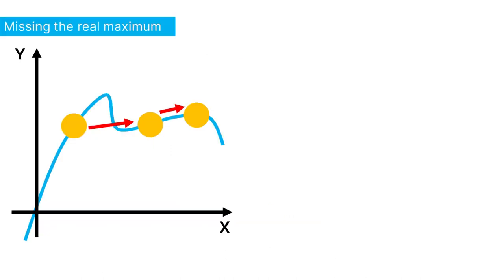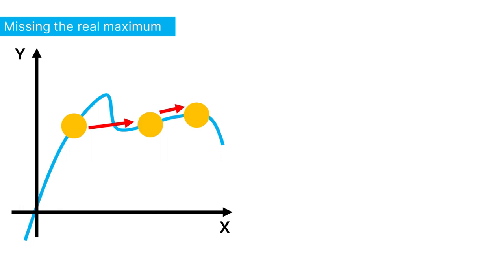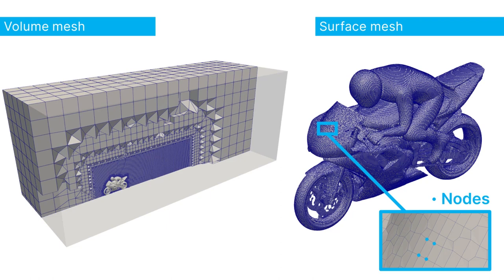Of course, if the step size is too big, you can overshoot and miss the peak, or you can get stuck on a local peak. In aerodynamic simulations, the airflow around an object is chopped up into small bits and pieces called cells within the mesh, much like the pixels in a digital photograph.